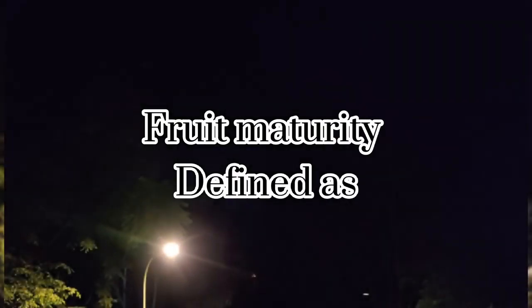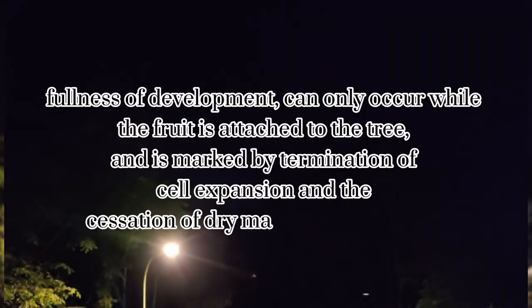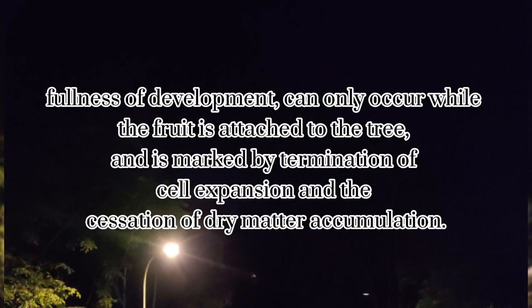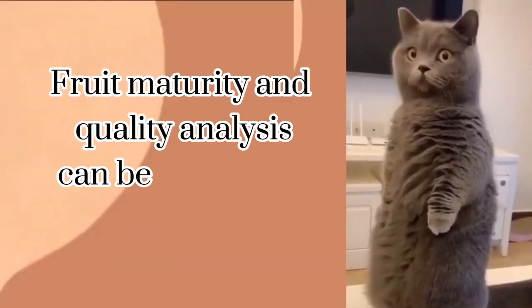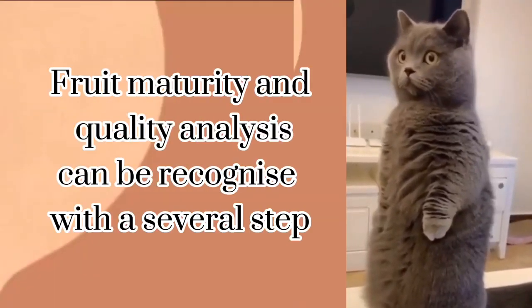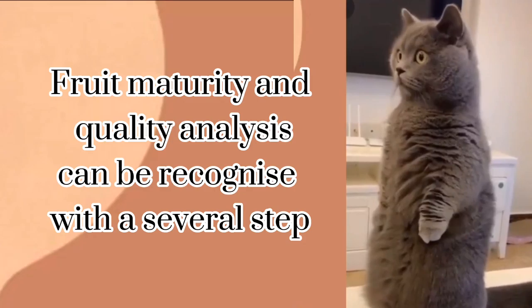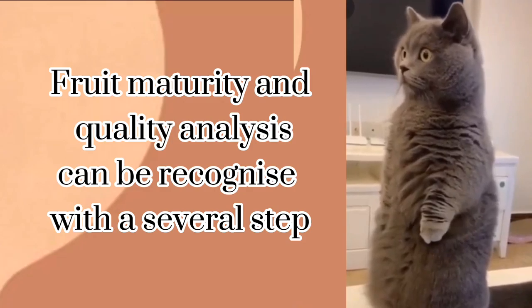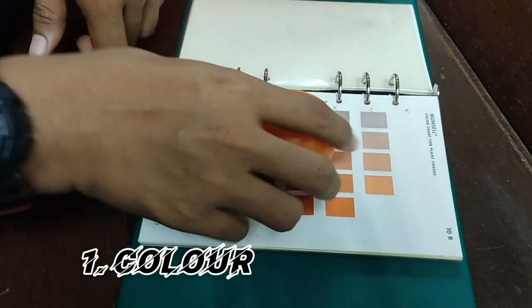Fruit maturity, defined as fullness of development, can only occur while the fruit is attached to the tree, and is marked by termination of cell expansion and the cessation of dry matter accumulation. Fruit maturity and quality analysis can be recognized with several steps.